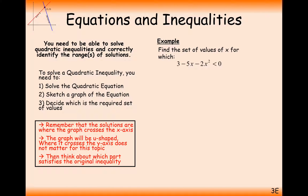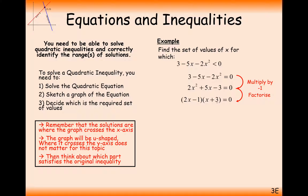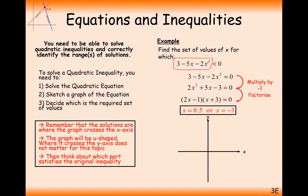Let's go through another example, slightly more challenging with difficult numbers: 3 minus 5x minus 2x squared is less than 0. We could switch the problem around, but instead we'll straight away solve the equation by multiplying through by minus 1 and factorising. This gives x equals 0.5 or x equals minus 3. We sketch this as a negative 2x squared graph — upside down — with intersections at minus 3 and 0.5.